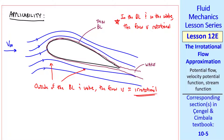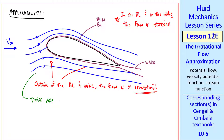Inviscid and irrotational are not exactly the same. In the inviscid flow approximation, we neglect all the viscous terms. In the irrotational flow approximation, we keep the viscous terms in but approximate that the flow is irrotational. It's most proper to say these are regions of irrotational flow, since the entire flow field is not irrotational.